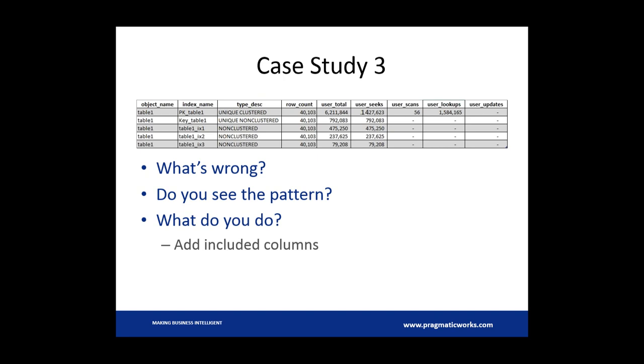For a third kind of case study, and before anyone checks my math I will tell you that number is wrong. But sometimes when you look at your seeks, in this case we got 1.4 million, and you look at your lookups which are at 1.5 million, you still have an excessive number of lookups compared to your seeks because that number is still higher.